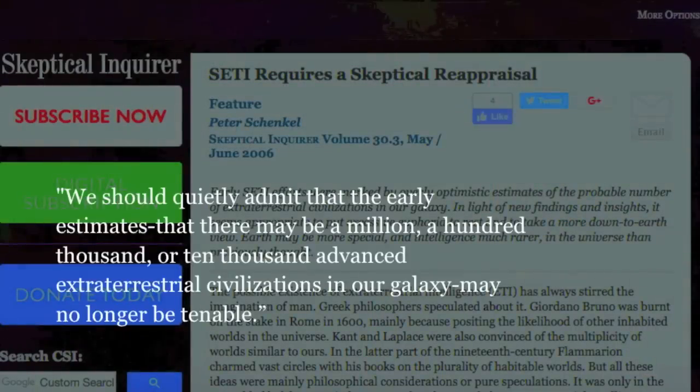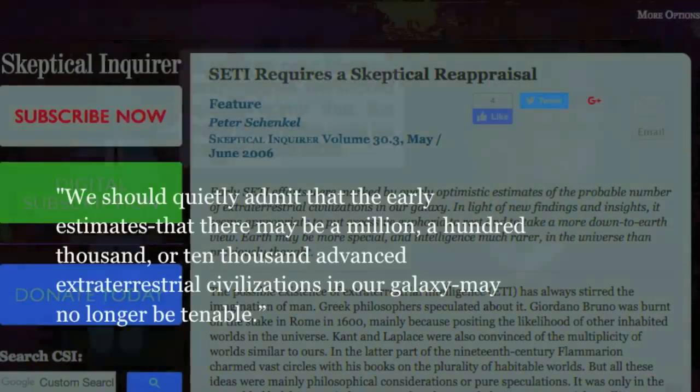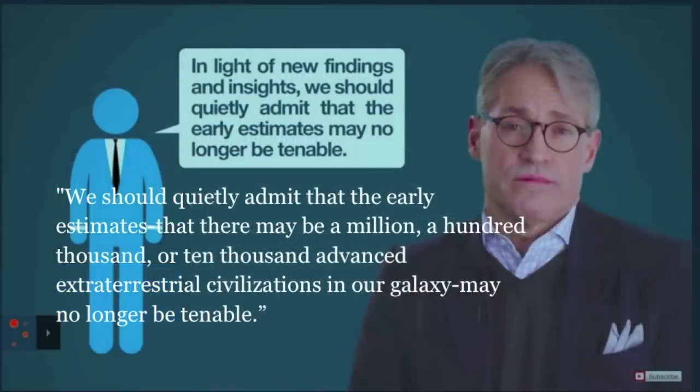We should quietly admit that the early estimates, that there may be a million, a hundred thousand, or ten thousand advanced extraterrestrial civilizations in our galaxy may no longer be tenable. So what PragerU left out was that Schenkel wasn't talking about life, he was talking about intelligent life. And he wasn't referring to our universe, he was referring to our galaxy. And he specifically stated that the early estimates he was referring to ran into the hundreds of thousands.